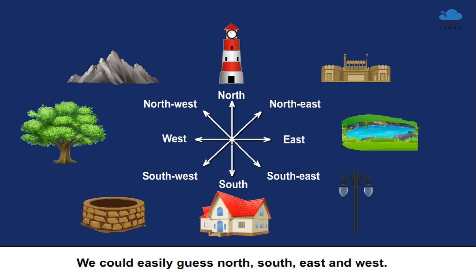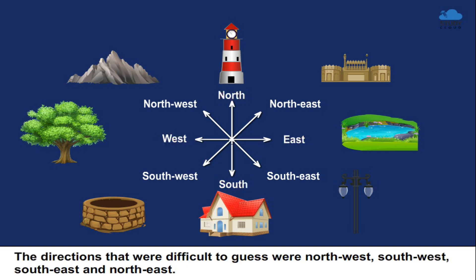We could easily guess North, South, East, and West. The directions that were difficult to guess were North-West, South-West, South-East, and North-East.